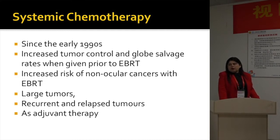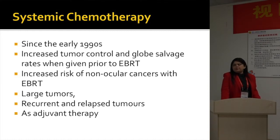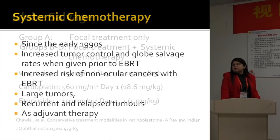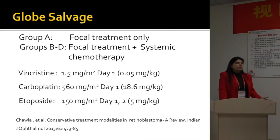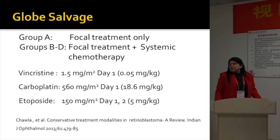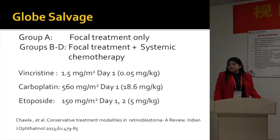Systemic chemotherapy can be used for large tumors, for recurrent and relapsed tumors, and as salvage therapy. Group A tumors we treat only with focal treatment — laser, TTT, or cryotherapy. For Group B through D tumors, we use focal treatment combined with systemic chemotherapy. We also use etoposide on two days — that is the protocol we use at our center.